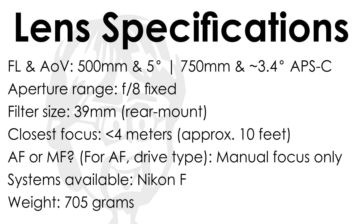The aperture range is fixed at f8 because of the way that mirror lenses are built — there is no way to put an adjustable aperture into them. The filter size is 39mm because this lens uses rear mount filters. There is a front filter thread that is 82mm, but it's a 0.75mm pitch and standard 82mm filters will not fit on it.